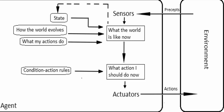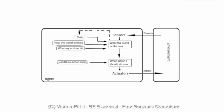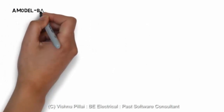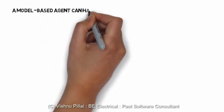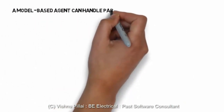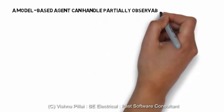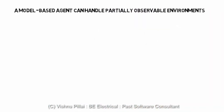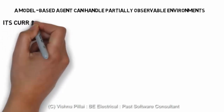This kind of agent will consider facts like how the world will evolve, or what will be the change or effect of the agent's actions on its environment. The agent will act based on condition-action rules. Summing up, a model-based agent can handle partially observable environments.